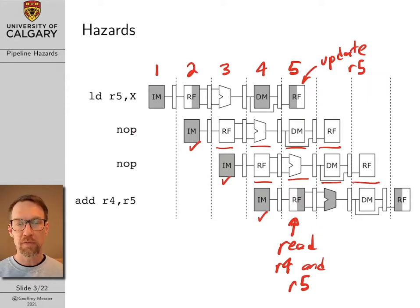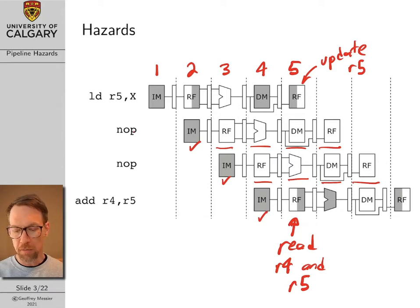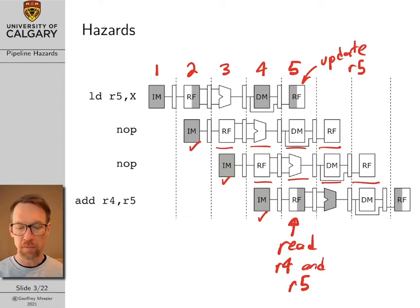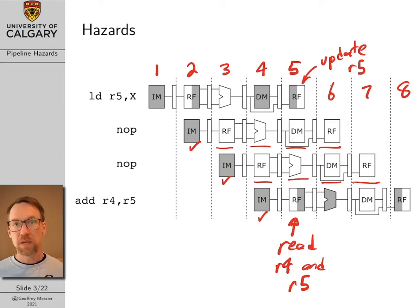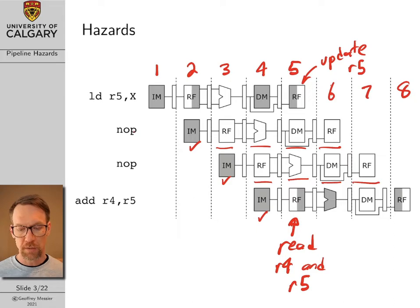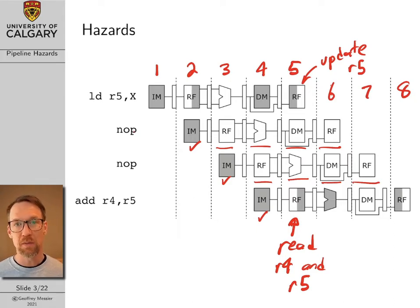Using no-op commands kind of defeats the purpose of using pipelining in the first place. If we have to fill up the pipeline with no-op commands, we take a throughput hit. Rather than having one command come out of our pipeline every clock cycle, we have one command come out at clock cycle 5, and it's not until clock cycle 8 that we have another useful command. We take a penalty in throughput. A lot of what this lecture is going to be about is presenting strategies to deal with hazards without taking that throughput penalty.